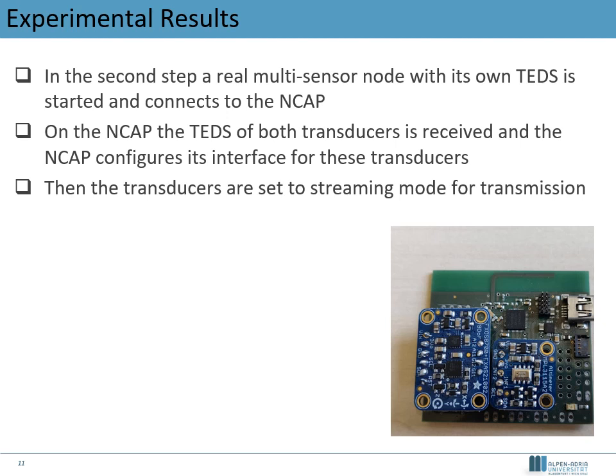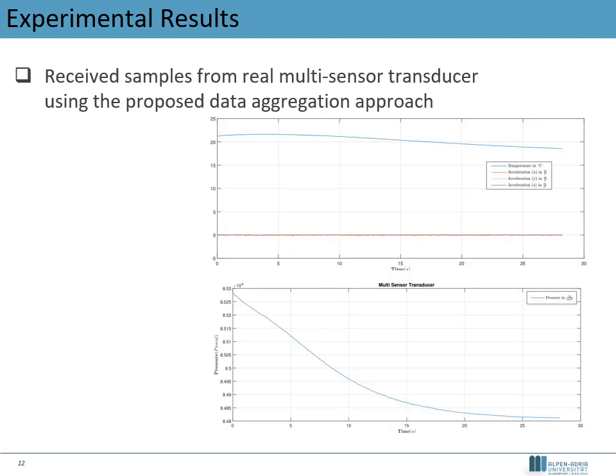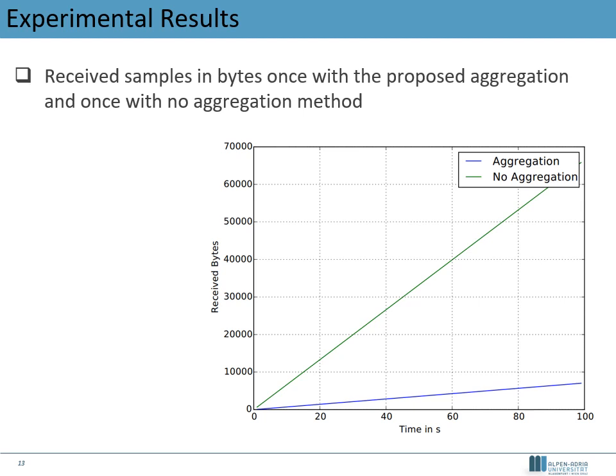The measured and stored samples on the NCAP can be visualized via the web server. The samples with correct timestamps transmitted from the real transducer are displayed, with temperature and accelerometer data shown in the top figure and pressure data in the bottom figure, using the proposed data aggregation approach. The experimental setup was run twice: once using the proposed data aggregation approach, and once using TEDs but without any data aggregation — where each measured sample is transmitted individually with a corresponding sensor ID. When data aggregation is used, the number of bytes transmitted via the wireless link is less than in the non-aggregation case, due to decreased overhead. Additionally, since the transmission rate is lower, the sending part of the transducer can be set to a hibernating mode between packets to further reduce energy consumption.